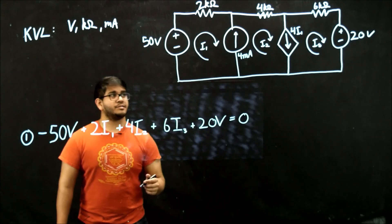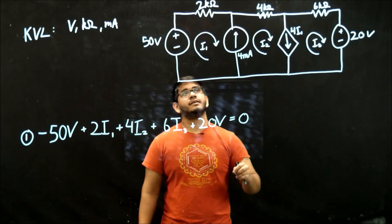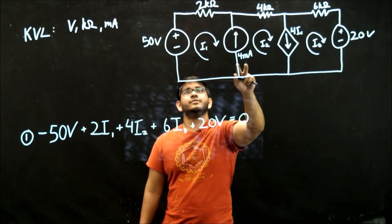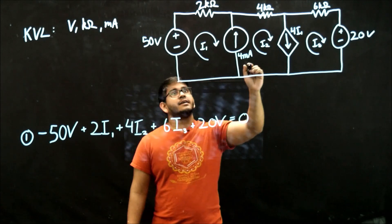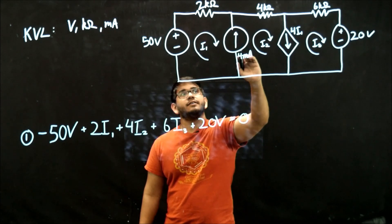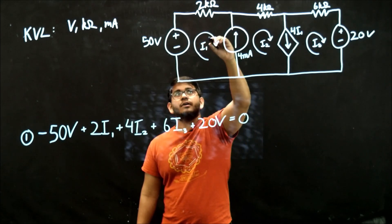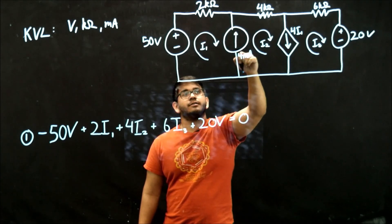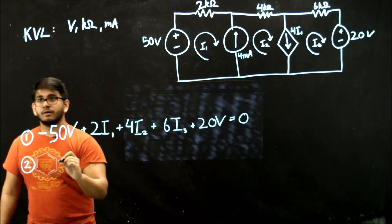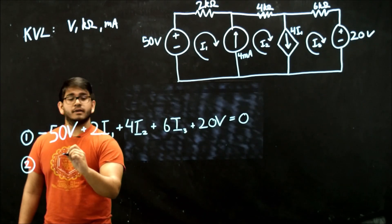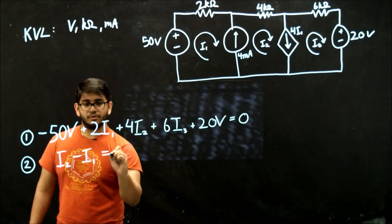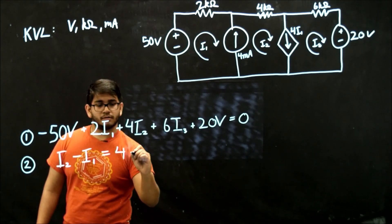Then what we're going to have to do is write two equations for each of these branches. So for the first branch between i1 and i2, we can see that the current i2 will be going in the direction of the independent current source, and the current i1 is going in the opposite direction of the independent current source. So what we end up with is, we have i2 minus i1 equals 4 milliamps.